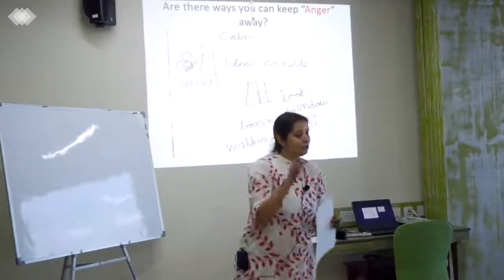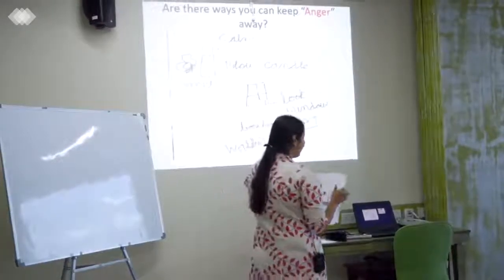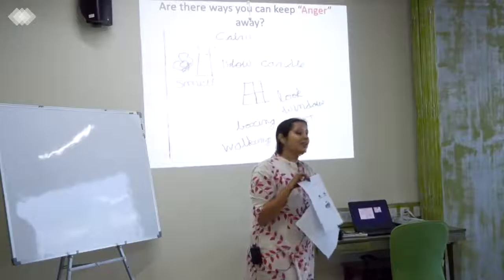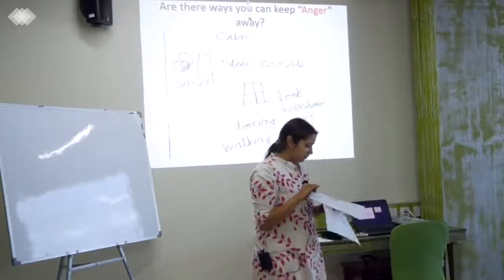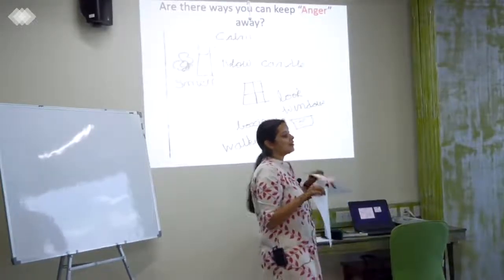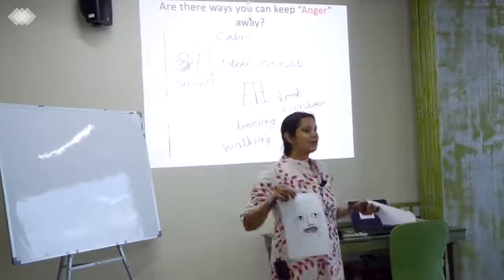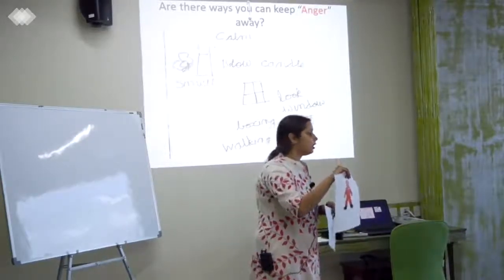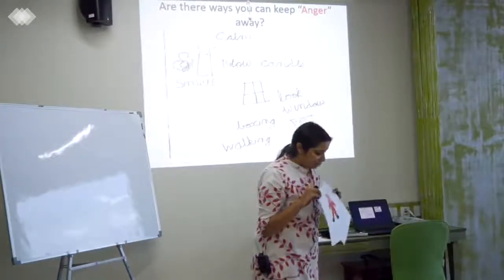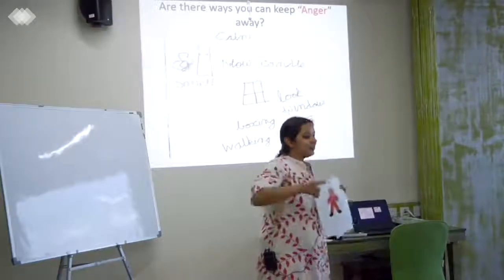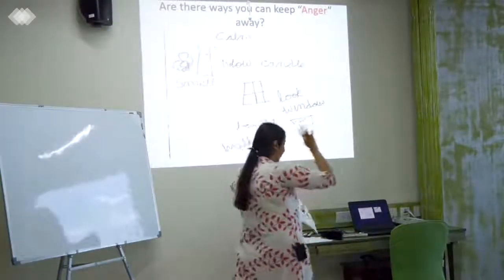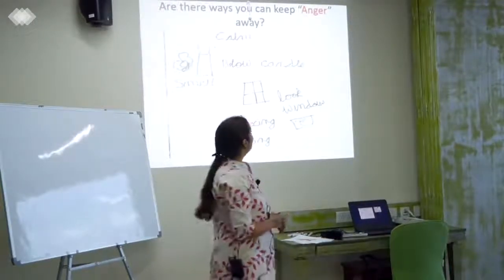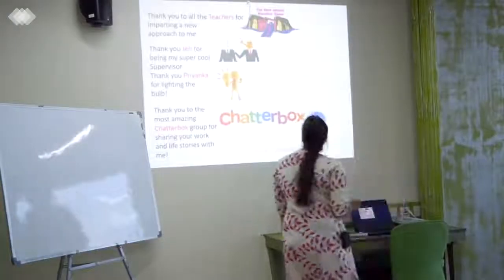A third kid broke my assumptions about what happy should look like. When I asked him to draw how happy looks, I didn't believe it at first and kept asking if this was really happy — and then I realized I was imposing a discourse that happy has to be a smile or something brimming with positivity. He also broke my expectations about where happiness is felt in the body — he colored the whole thing, meaning he feels happiness all over. The previous two kids had pointed to specific body parts, so this really challenged my assumptions.